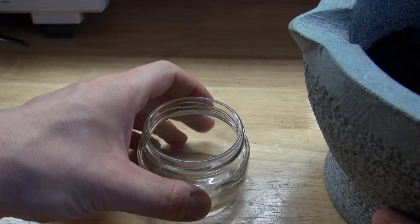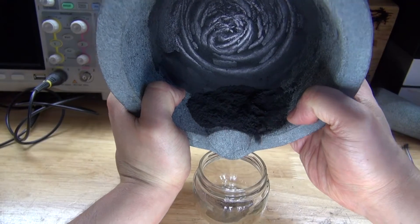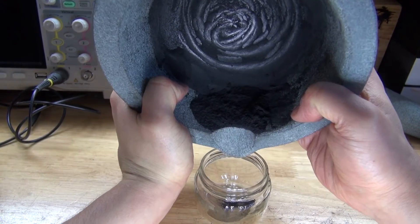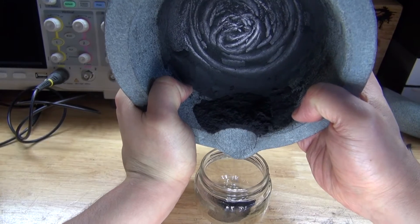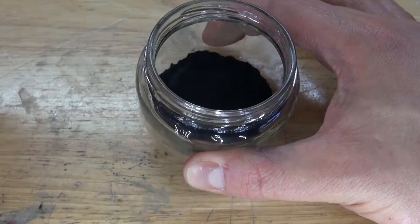Next I'm going to transfer this powder into this jar. Carefully, don't spill. And there, I have now a fine graphite powder dust ready to use.